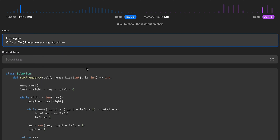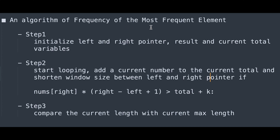Let me summarize the step-by-step algorithm for 'Frequency of the Most Frequent Element.' Step 1: Initialize left and right pointers, result, and current total variables. Step 2: Start looping — add current number to total, and shorten the window between left and right pointer if nums[right] × window size is greater than total + k. Step 3: Compare current window length with current max length. I hope this video helps — please subscribe, like, or leave a comment!